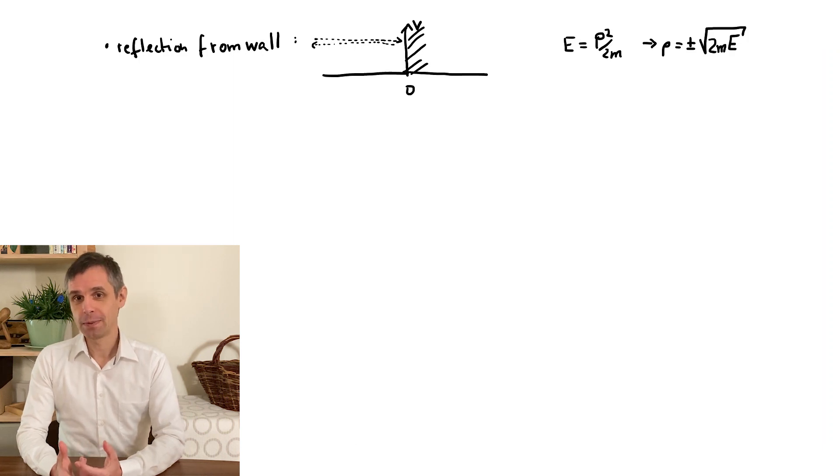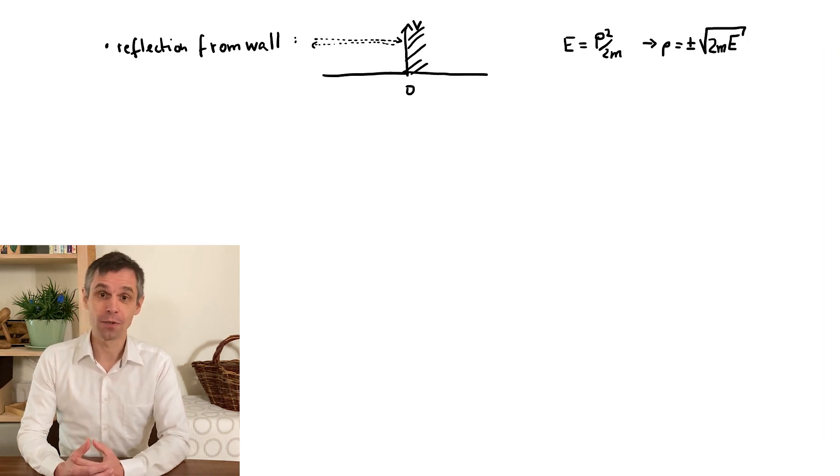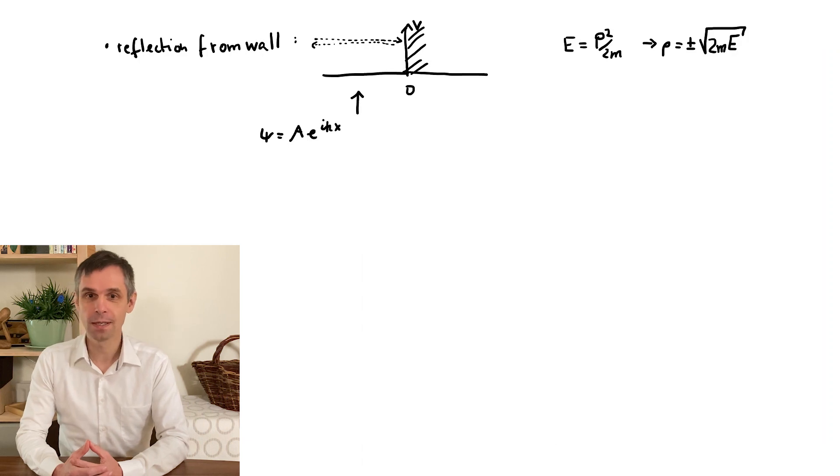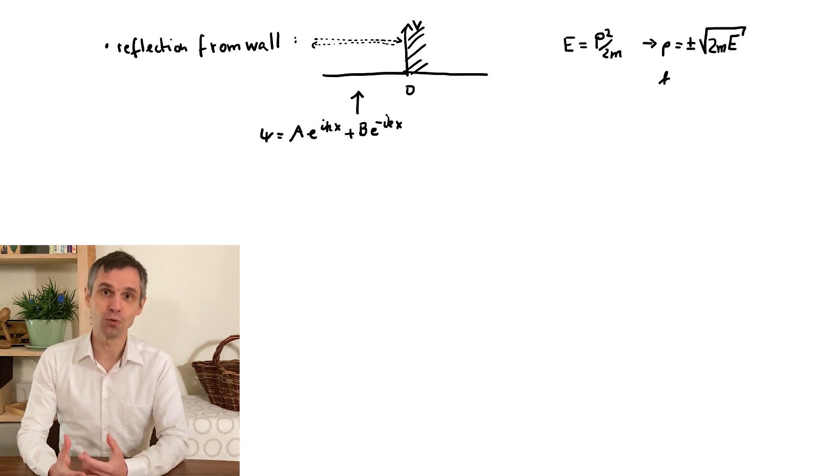Quantum mechanically, we can recycle the solutions from our first example. Namely, in the region where the particle moves freely, we have a superposition of two counter-propagating waves, with the wave numbers still related to the classic momentum by the de Broglie rule.